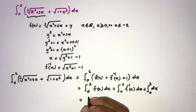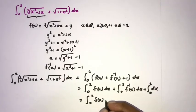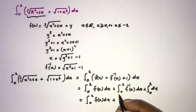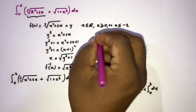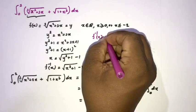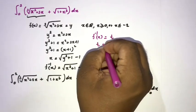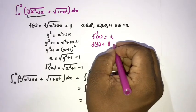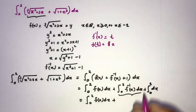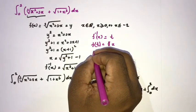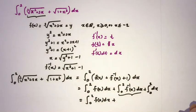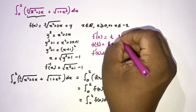We can break this into two separate integrals: the integral from 0 to 2 of f(x) dx, plus the integral from 0 to 2 of f⁻¹(x) dx. To evaluate the second integral I am going to use a substitution: let f⁻¹(x) equal t, so x equals f(t). Differentiating gives f′(t) dt equals dx.